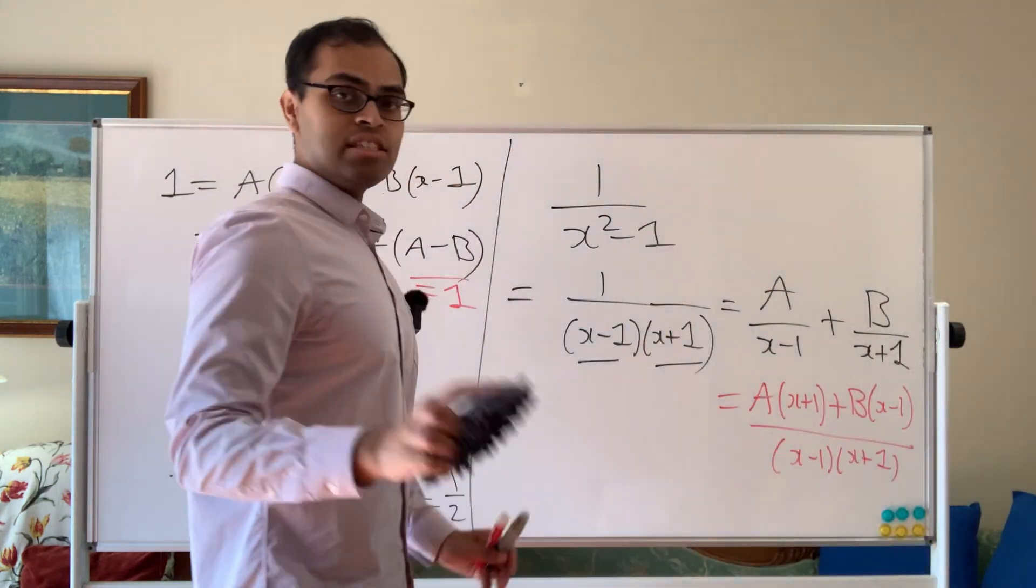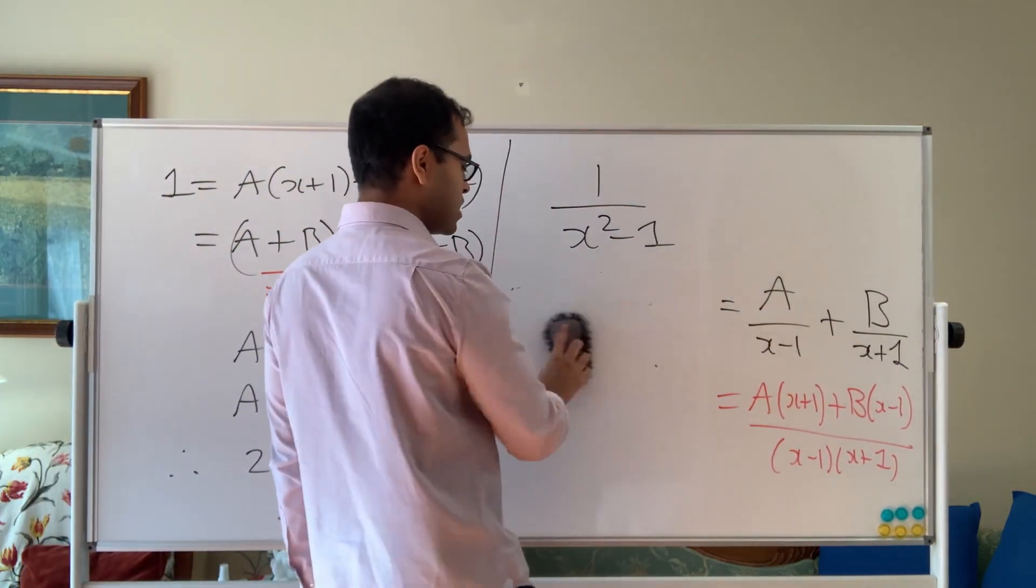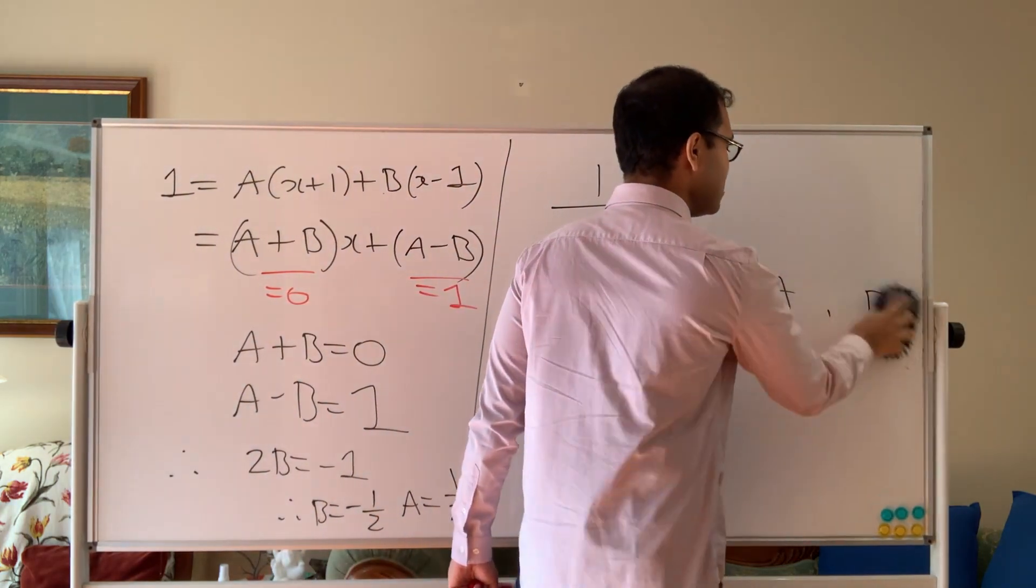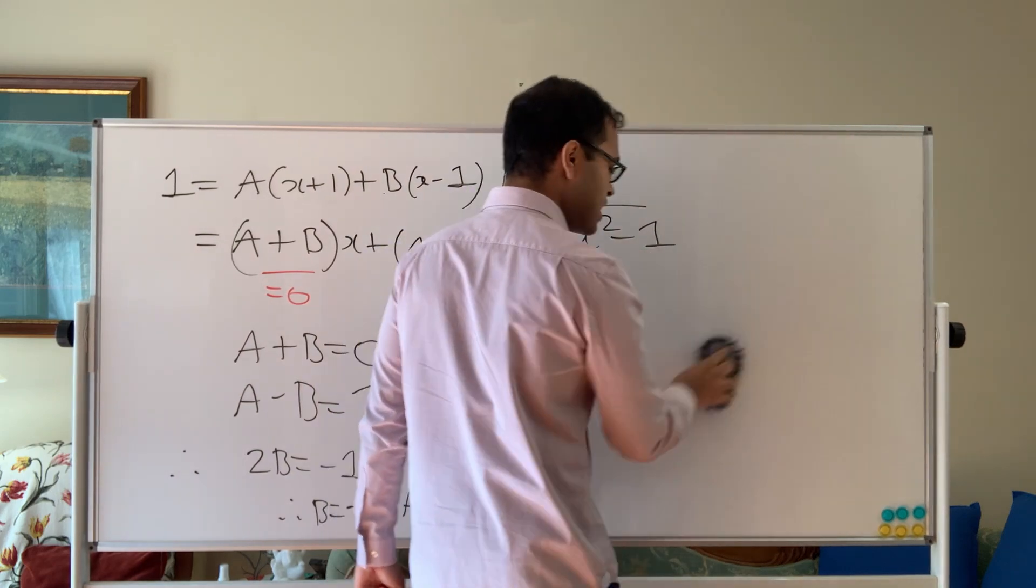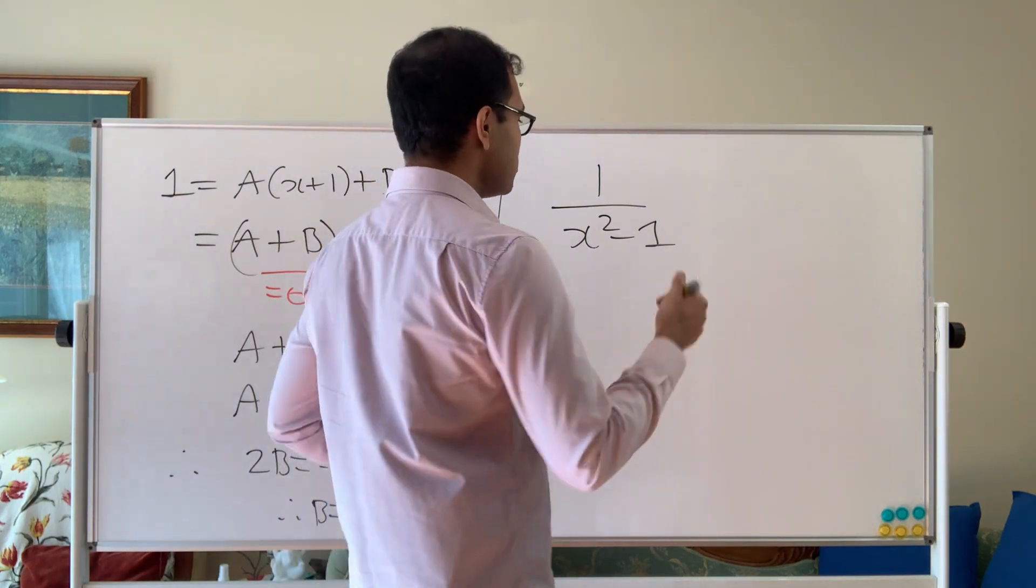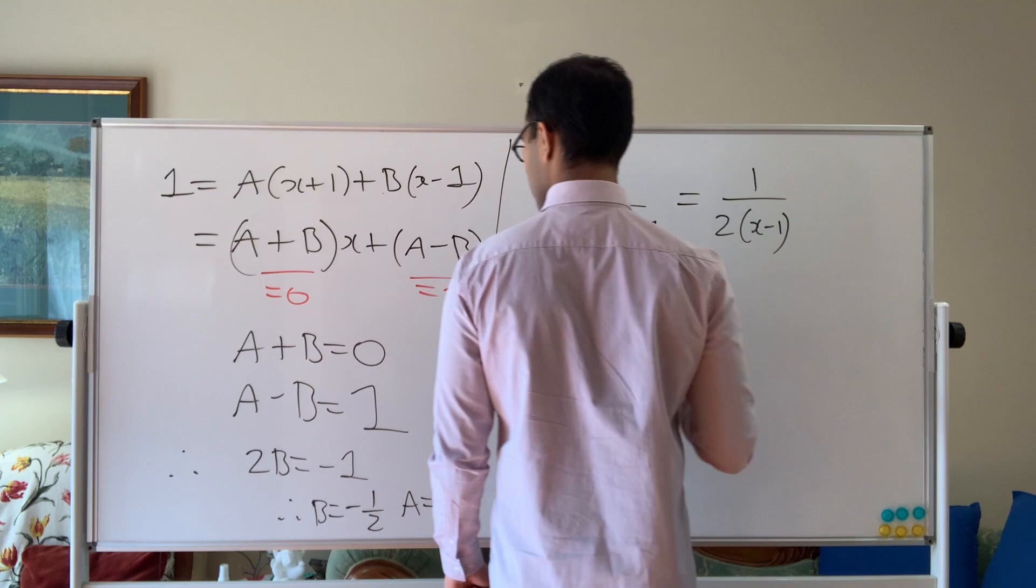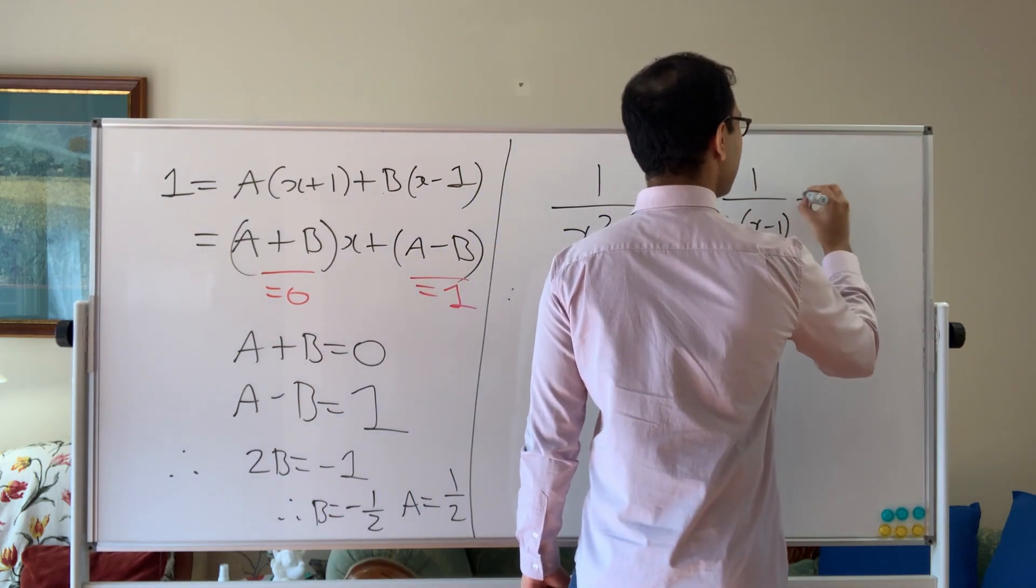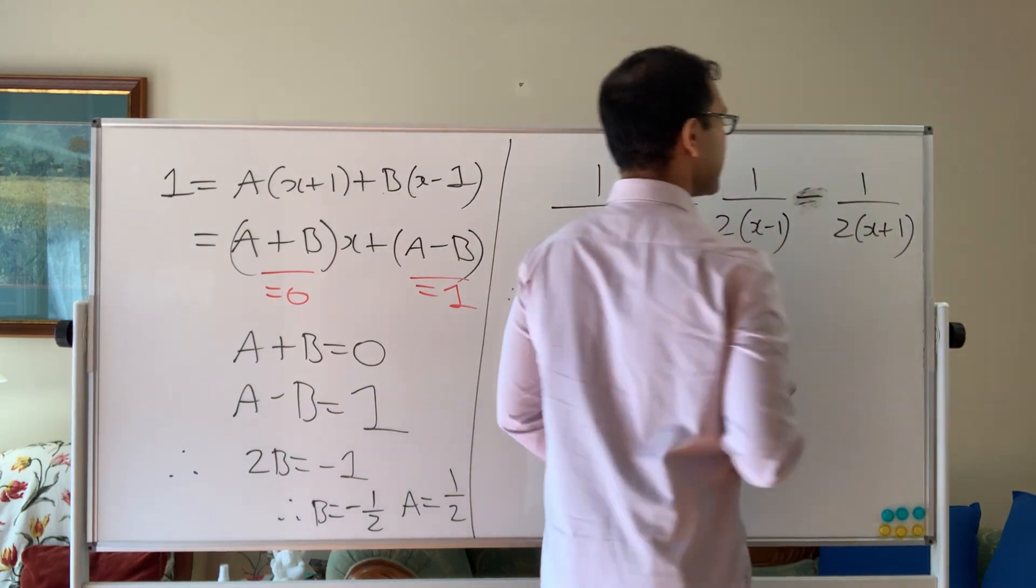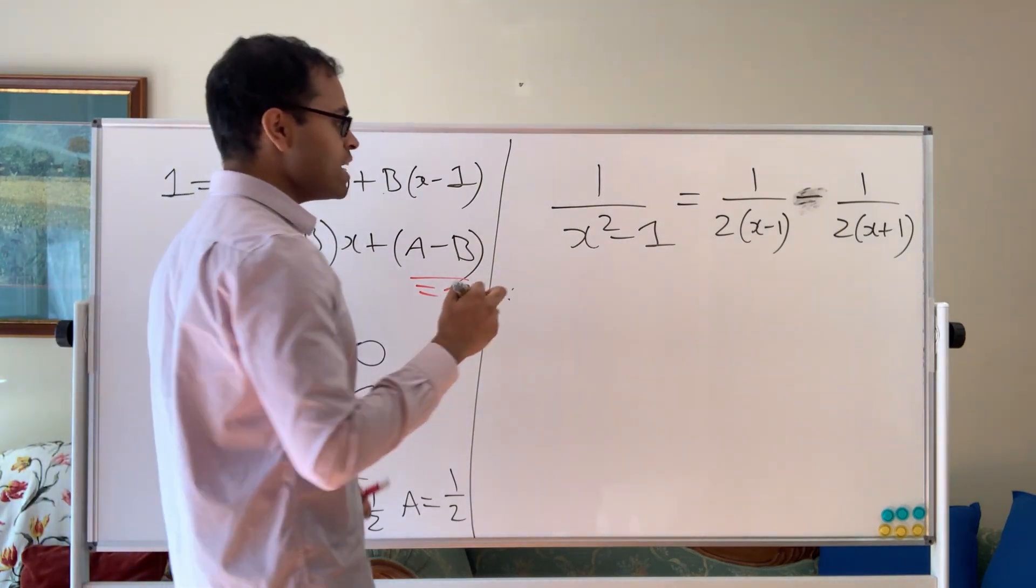So now what that tells us is we know A is half and B is minus half. We can now write this in a nice way. So in fact, we've got this expression. So we're going to now plug that in and integrate. And now we've basically simplified the integrand, because in some sense, the reason that we couldn't integrate it was because the denominator had a high power. So we couldn't do a u substitution. But now the denominator is not going to have that high power. So it's going to be A over x minus 1 plus B over x plus 1. So that's going to be the answer.